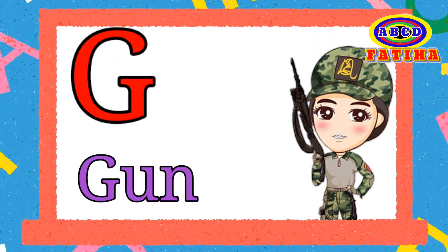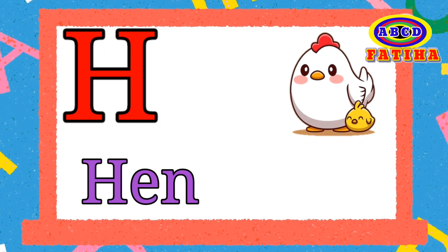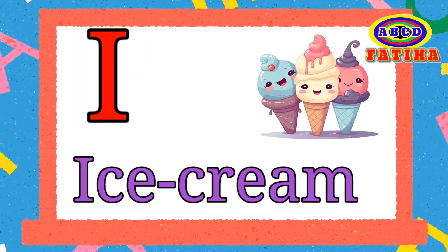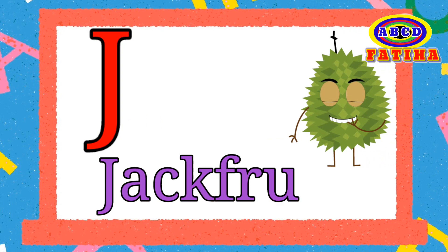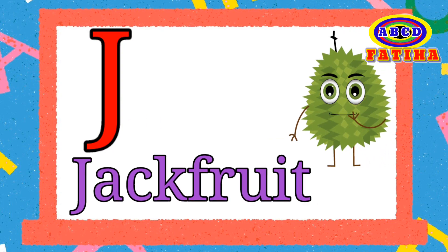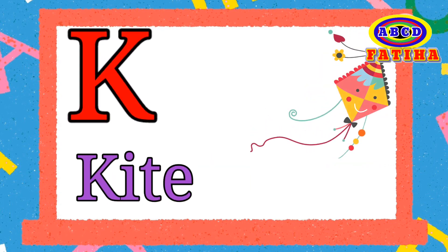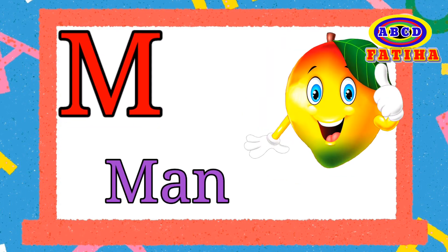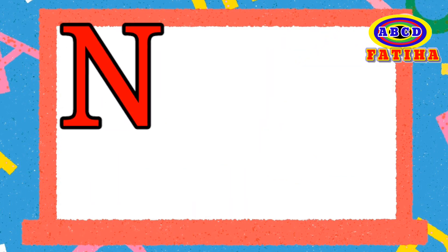G for Gun. H for Hen. I for Ice Cream. J for Jackfruit. K for Kite. L for Lion. M for Mango.